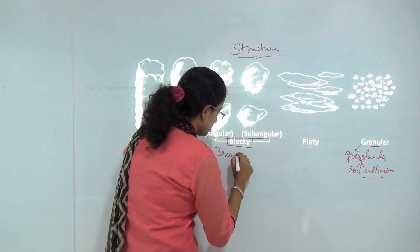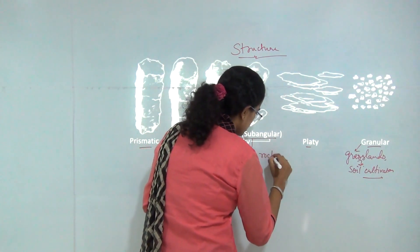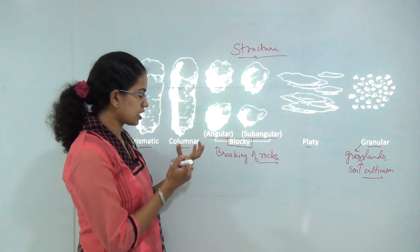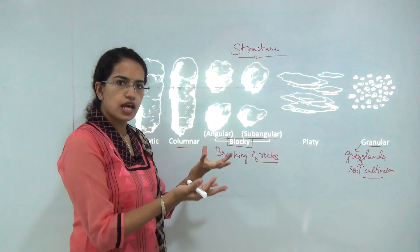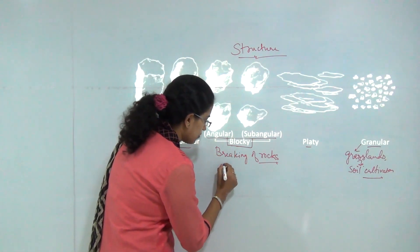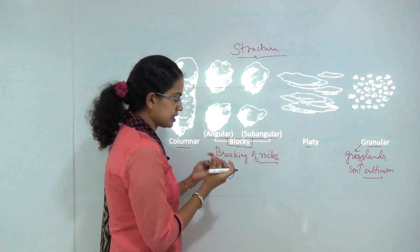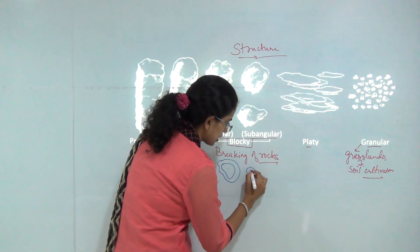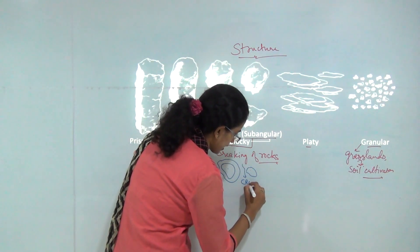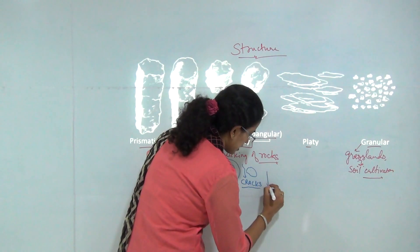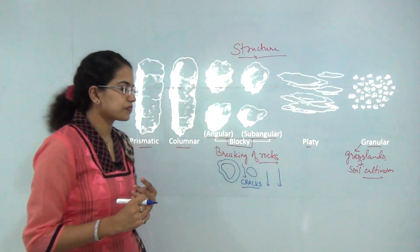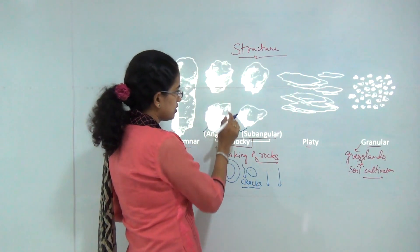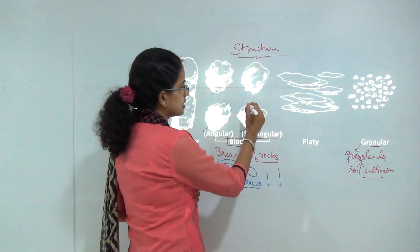Blocky soil is formed due to the breaking up of rocks. This is usually caused by the expansion and shrinking of clay — when a clay particle expands it grows and then shrinks again, forming cracks. These cracks are the region where water penetrates in. Blocky soil can be either angular, which has sharp angles, or subangular.